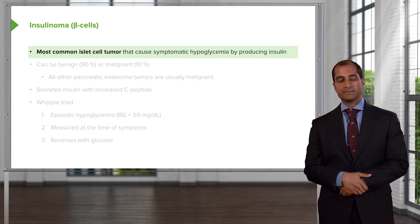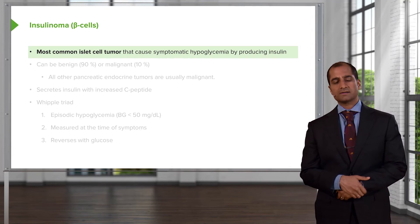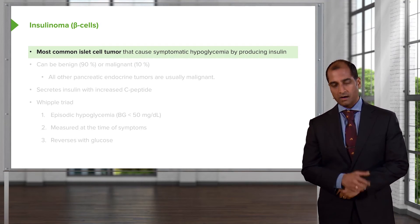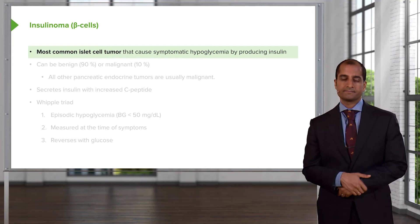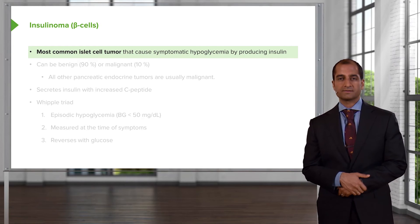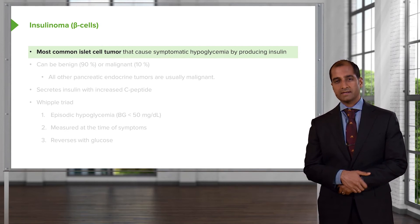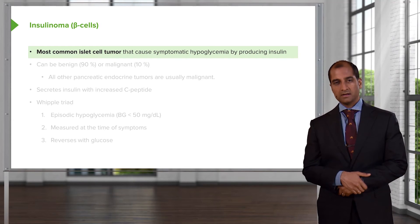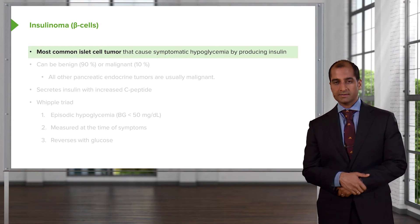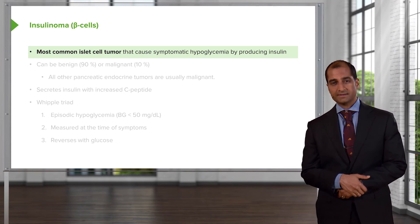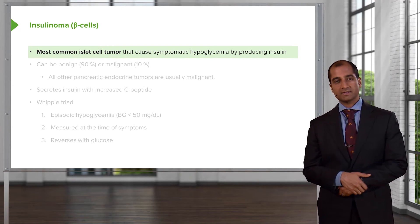With all this insulin being produced — endogenously, obviously — something important biochemically is that if you're producing insulin endogenously, in vivo, in excess, along with insulin you're also releasing C-peptide into circulation. So, you would expect to find high C-peptide levels in a patient with insulinoma.